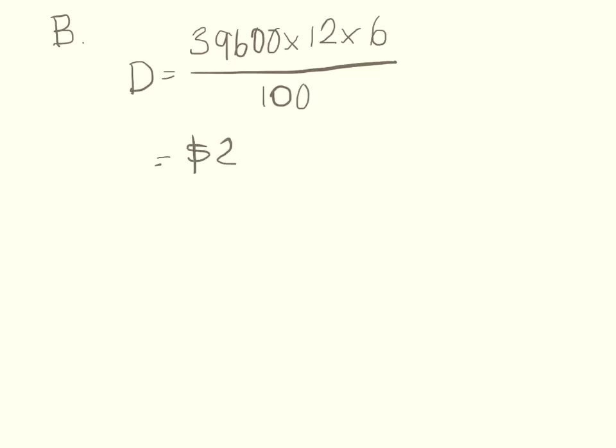Okay, question number B was asking what the total depreciation over the first six years is. So that one's another really easy one, use the same formula. So the principal stays the same, the depreciation rate stays the same, but the time changes of course to six. Divide it by 100, equals 28,512. So the total depreciation of the car in the first six years was 28,512.